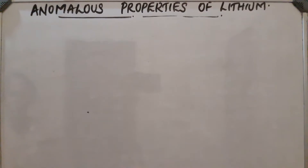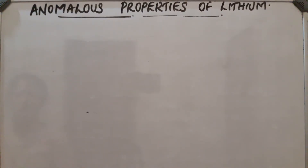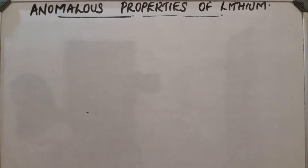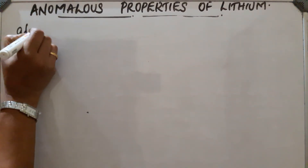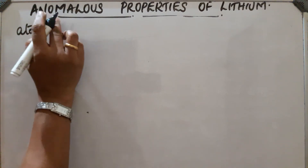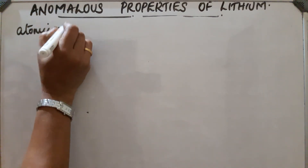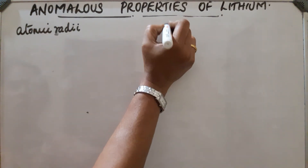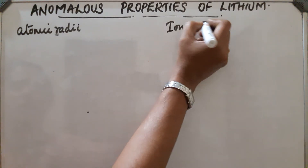There is a diagonal relationship between lithium and magnesium, so they show similarities. These similarities are due to their similar sizes — their atomic radii and ionic radii are similar.